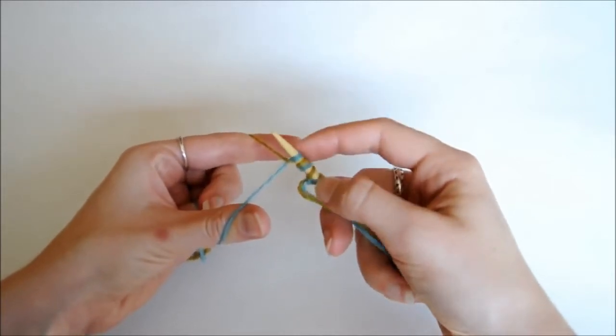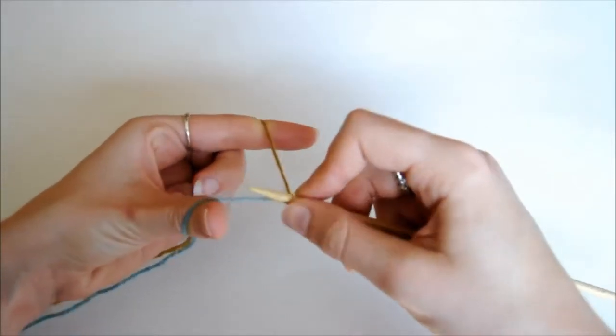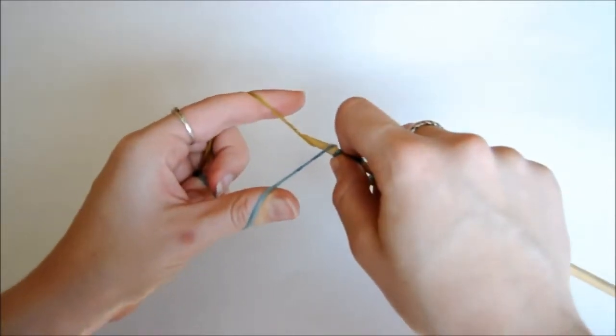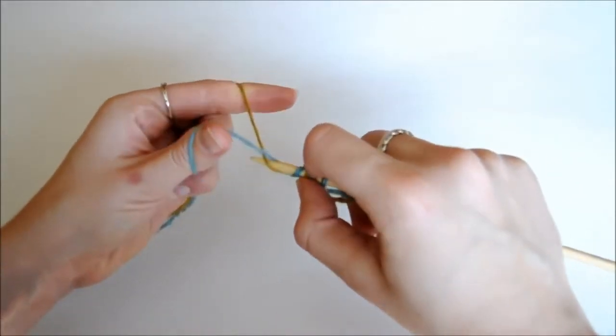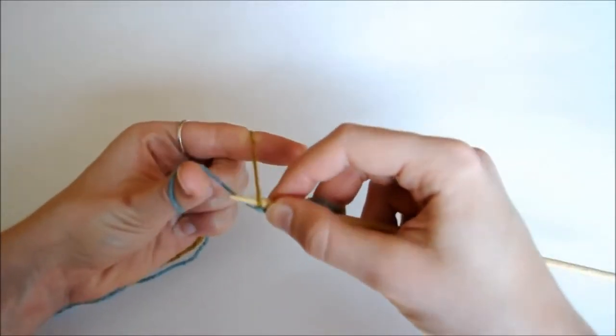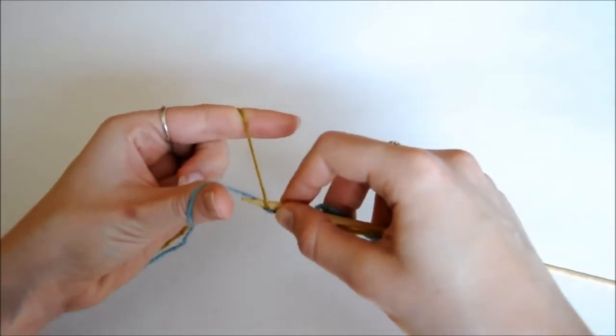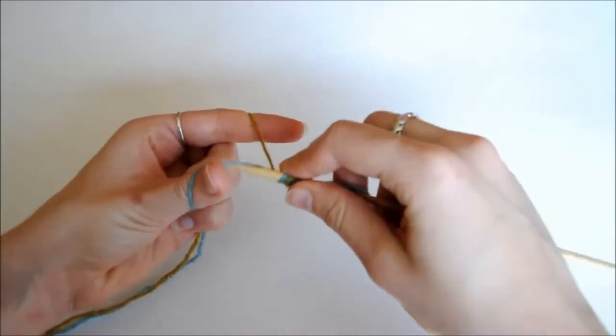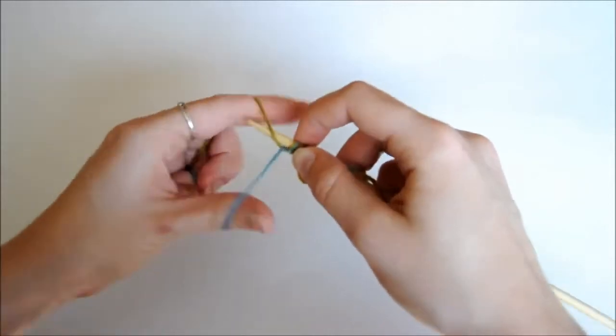So here I've got two pairs on my needle. I'm going to show you how to cast on again, you're going to go under the blue, around and under the yellow, and then bring it through. And then doing the opposite, we're going to go under the yellow, around and over and under the blue, and bring it through. And we're just going to continue like that until we have enough pairs of stitches.